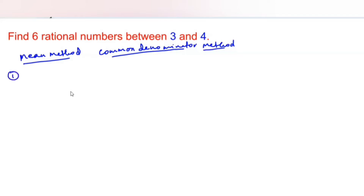First let us see the mean method. According to the mean method, if a and b are any two rational numbers given and you need to find rational numbers between them, then the first rational number you can find is a plus b by 2 — exactly the middle rational number between a and b, which can also be written as 1 by 2 into a plus b.